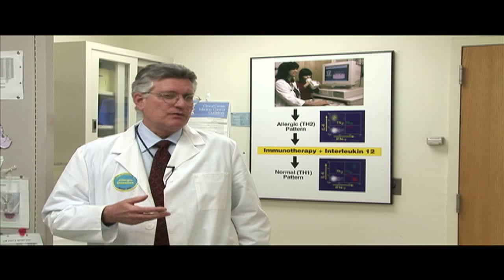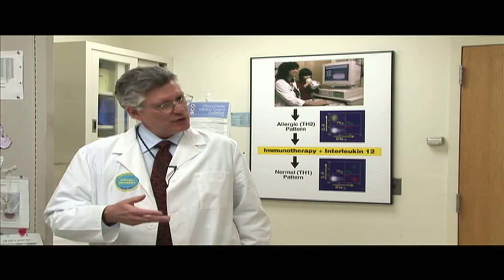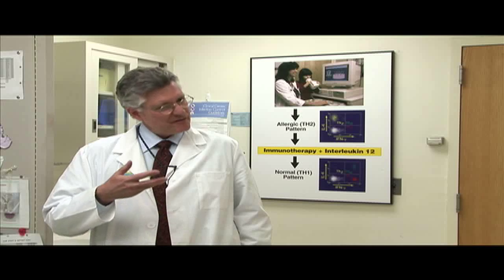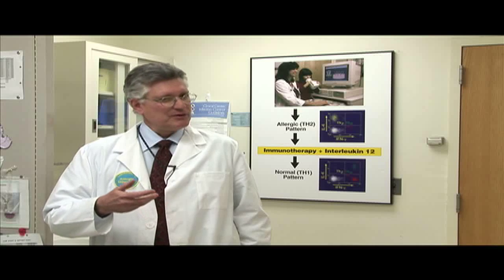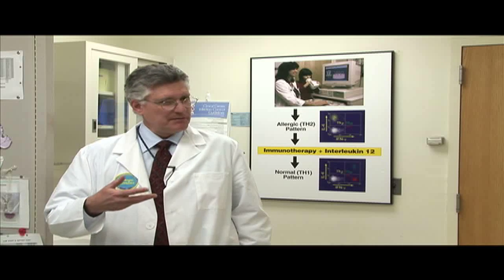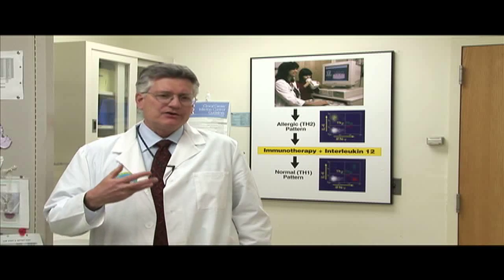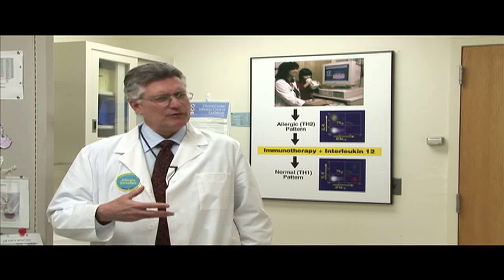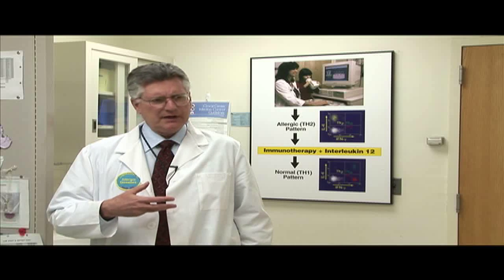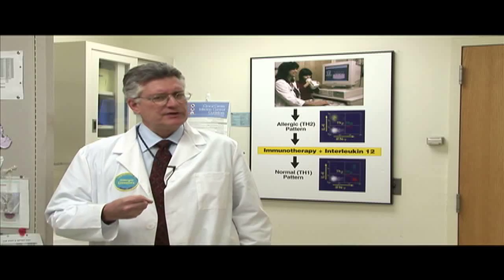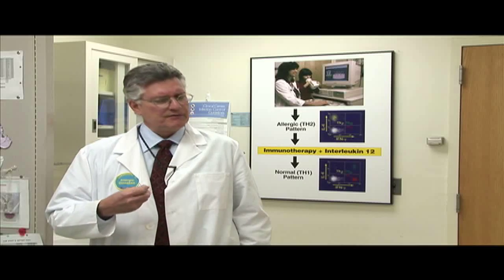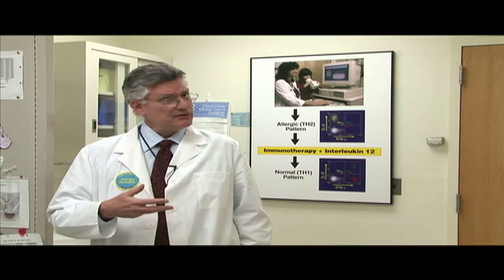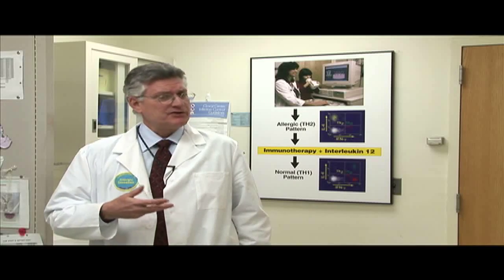No one really knows why we have this effector system of the protein called IgE in the blood and mast cells, but it's generally believed that it's a defense system that evolved over many thousands of years to defend us against certain kinds of infections and insults, such as parasites.